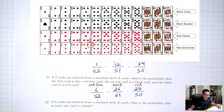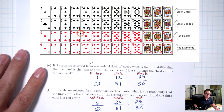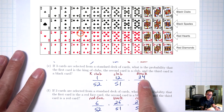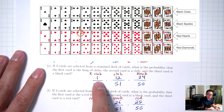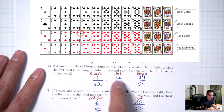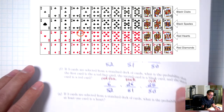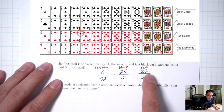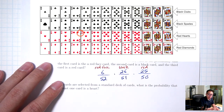Make sure you understand why in Part E we reduce by 2 — the first two slots were both black cards (king of clubs, club) — whereas in Part F we reduce by only 1 because we only used one red card.